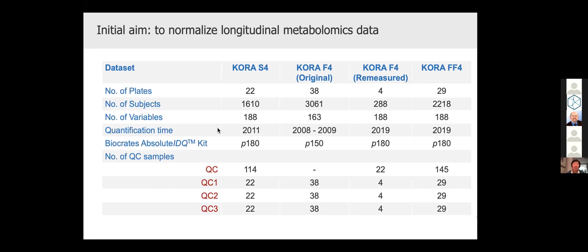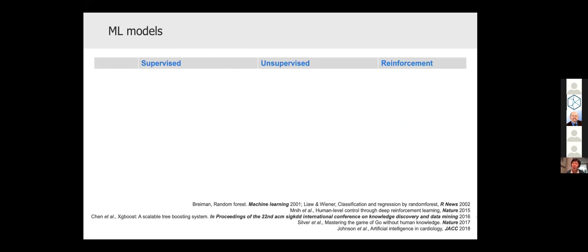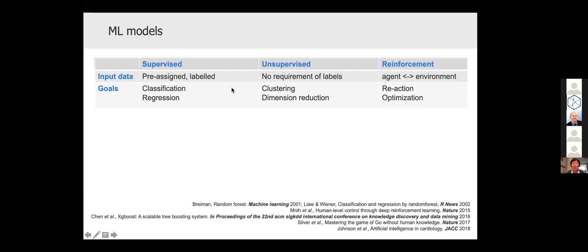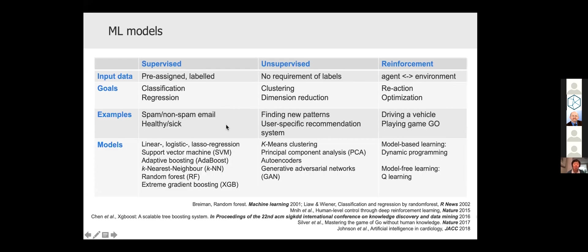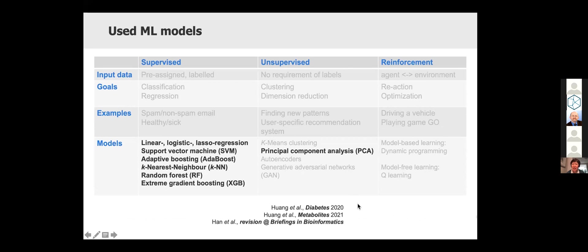To develop TIGER, our initial aim was to normalize the generated three time points data of the KORA study. For that we started to select existing machine learning models. Generally speaking, there are three types: supervised, unsupervised, and reinforcement, which depends on the input data and goals of the study. In our three studies which I will mainly introduce today, we used mainly supervised machine learning models. I will start with these three models.